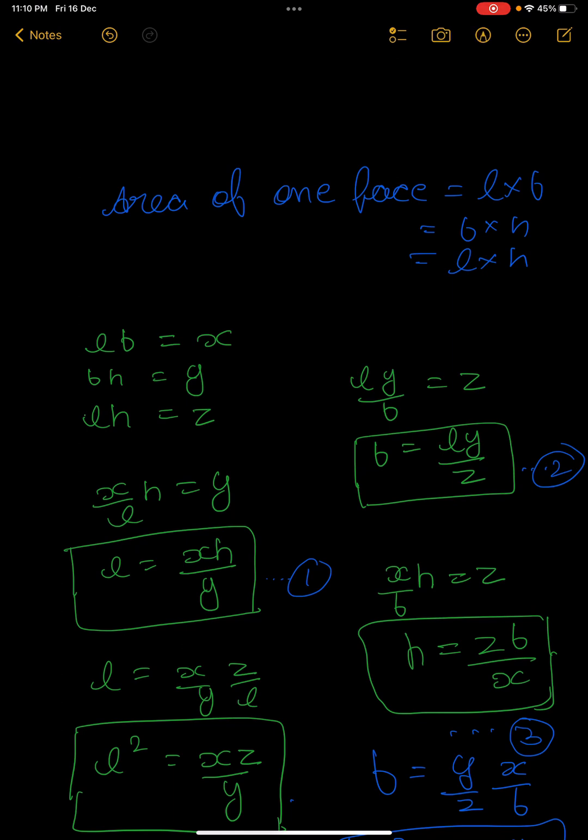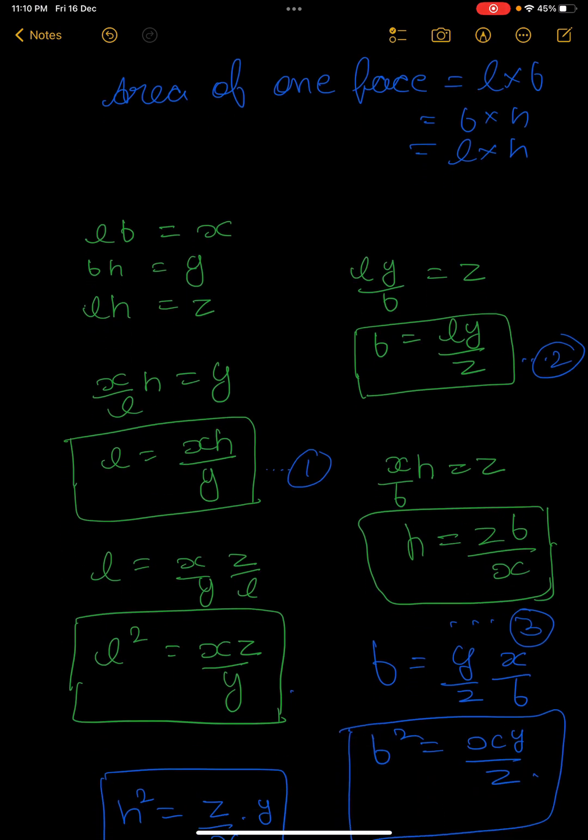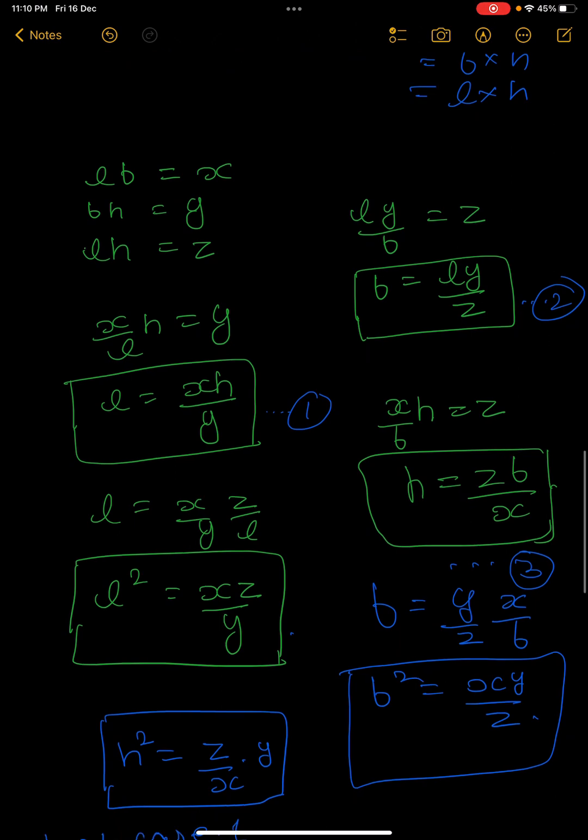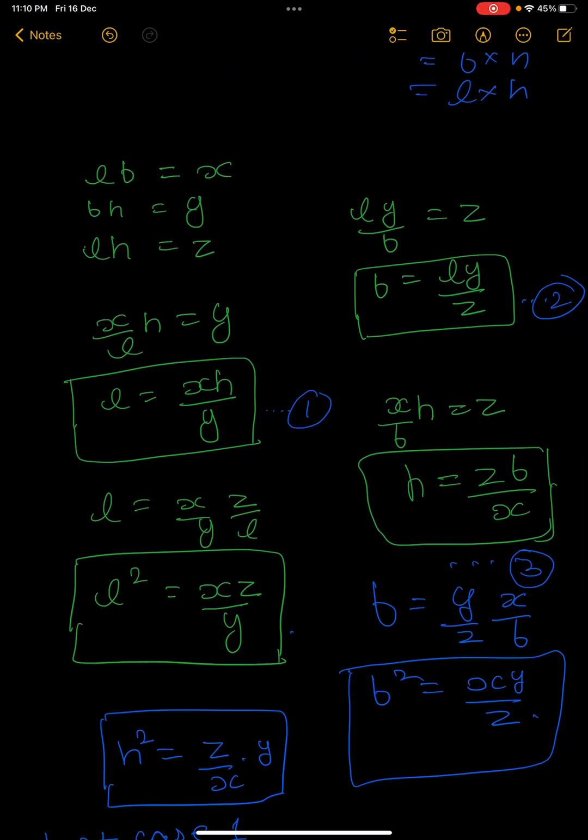Simply, let us assume the area of LB first face is x, second is y, and third is z. By solving these equations, you can find out the values of length, breadth, and height.